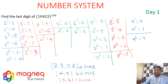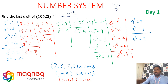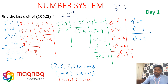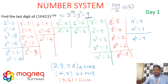Now solving: find the last digit of 10,423 to the power 130. The unit digit of 10,423 is 3. Since 3 repeats after 4 powers, divide 130 by 4 — remainder is 2. So we need 3² = 9. Therefore, 10,423^130 ends in 9.